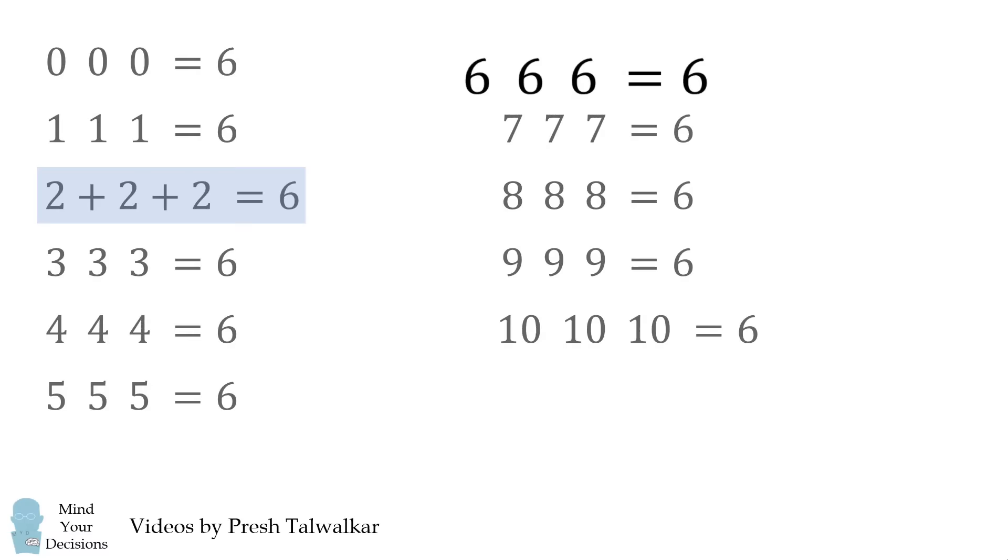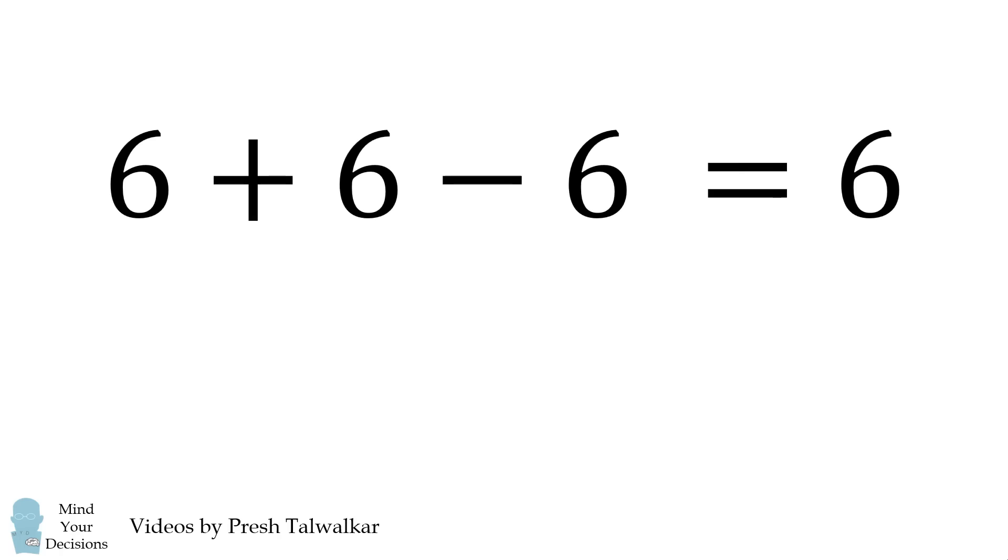Now, 6 6 6 is also similar. We can take 6 plus 6 minus 6 to get to 6, or we can also do 6 times 6 over 6 is equal to 6. For our aggregation of solutions, let's just go with the first equation.